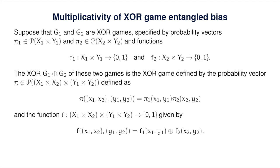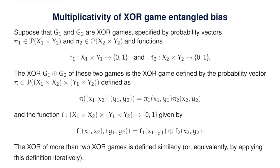In the XOR of G₁ and G₂, the referee independently chooses question pairs (X₁, Y₁) and (X₂, Y₂) according to pi₁ and pi₂, sends (X₁, X₂) to Alice and (Y₁, Y₂) to Bob, and they answer single binary values. They win if there exist A₁, A₂, B₁, B₂ such that A = A₁ XOR A₂, B = B₁ XOR B₂, and (A₁, B₁) and (A₂, B₂) would have won in G₁ and G₂ respectively. The XOR of any collection of XOR games is defined by iterating this construction.